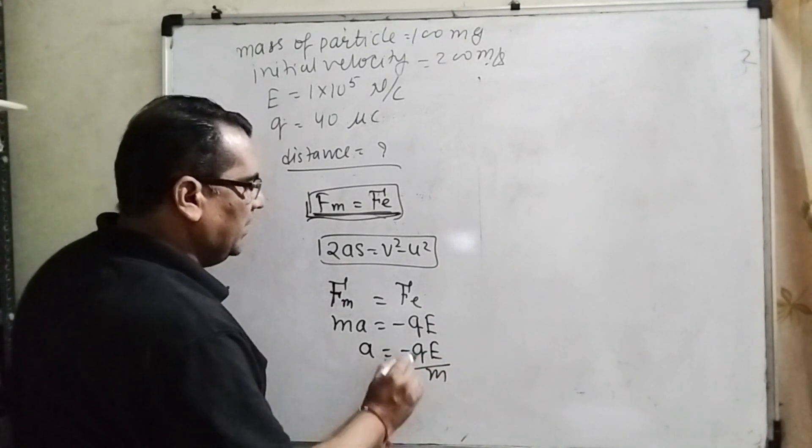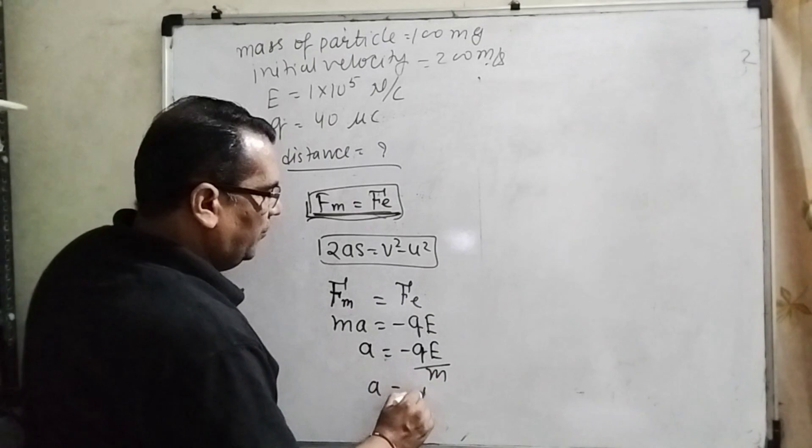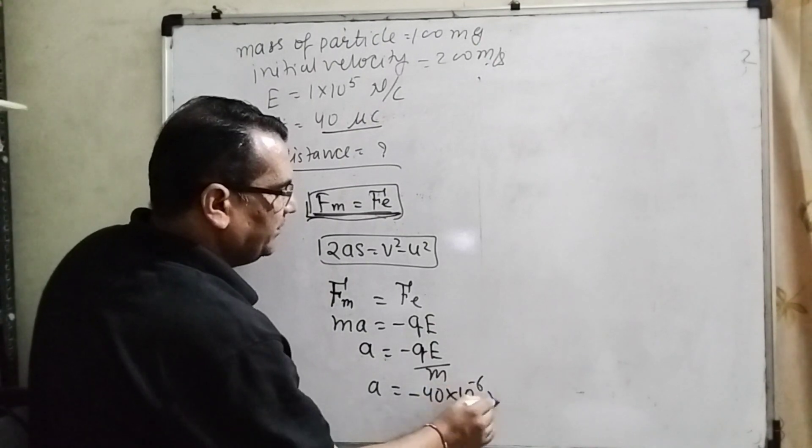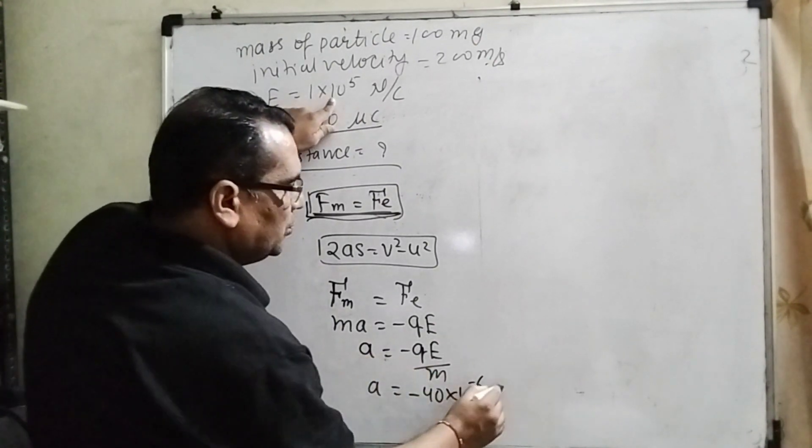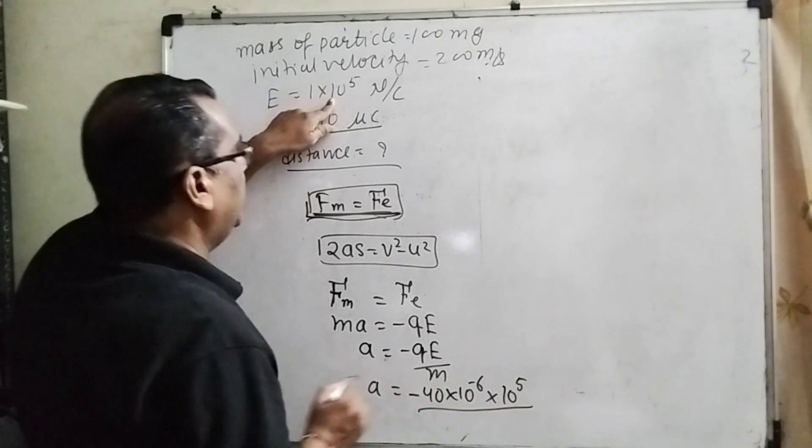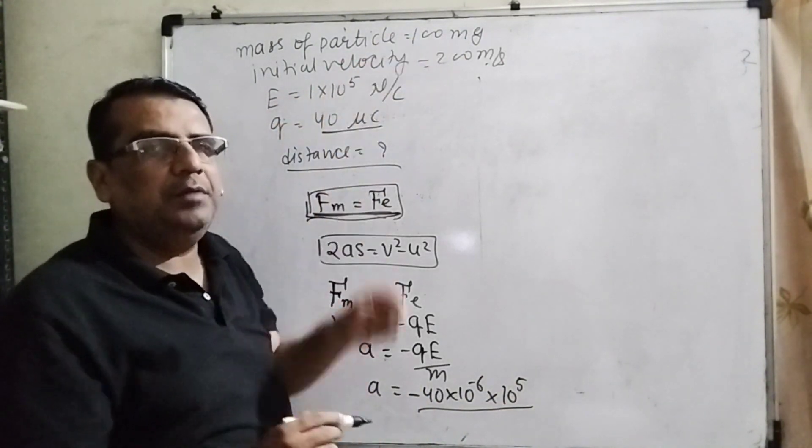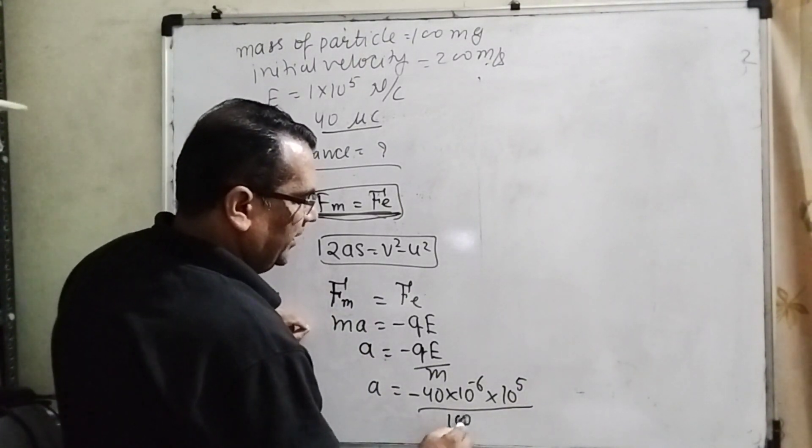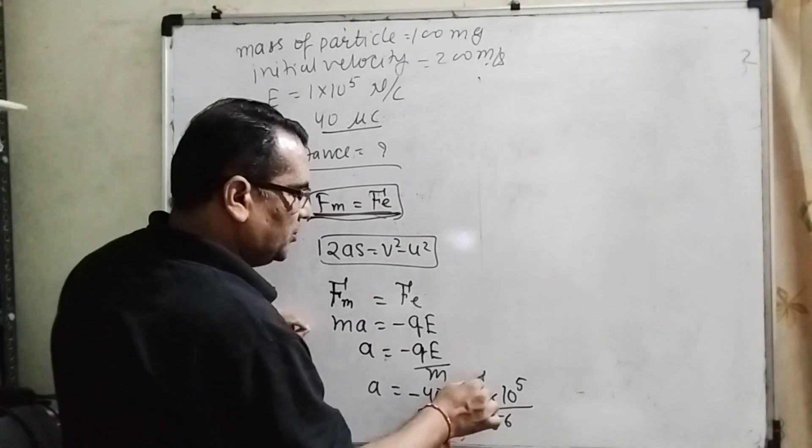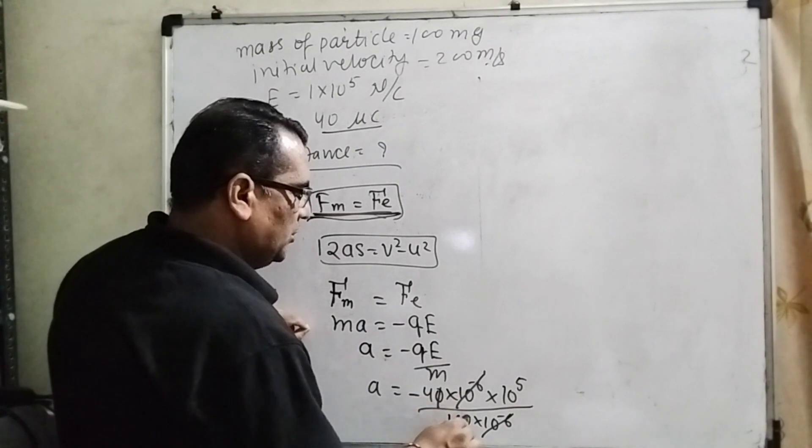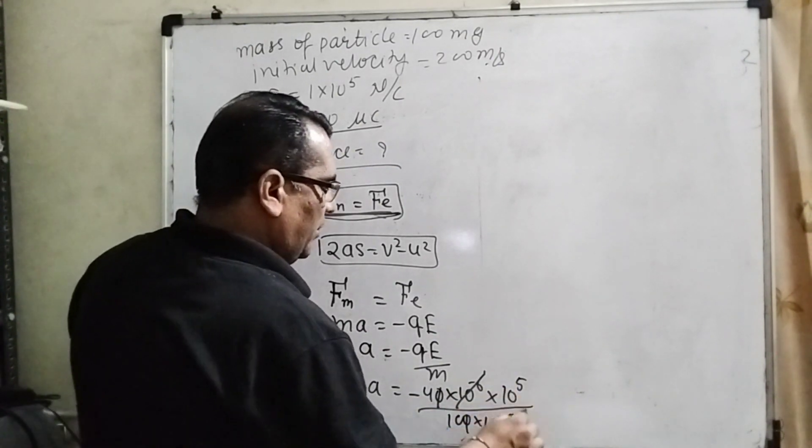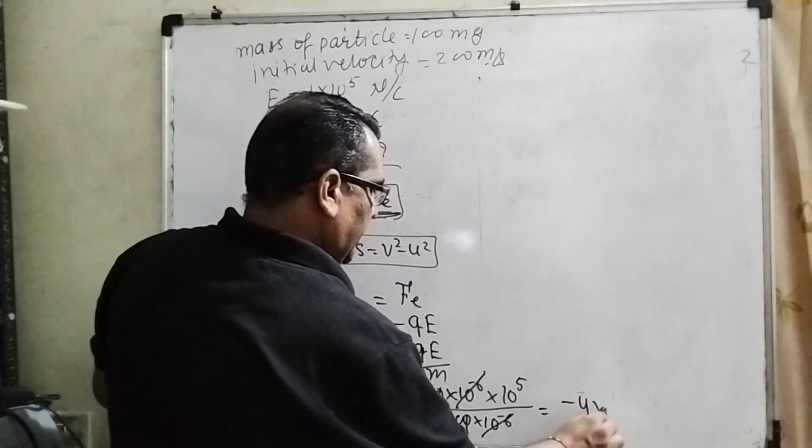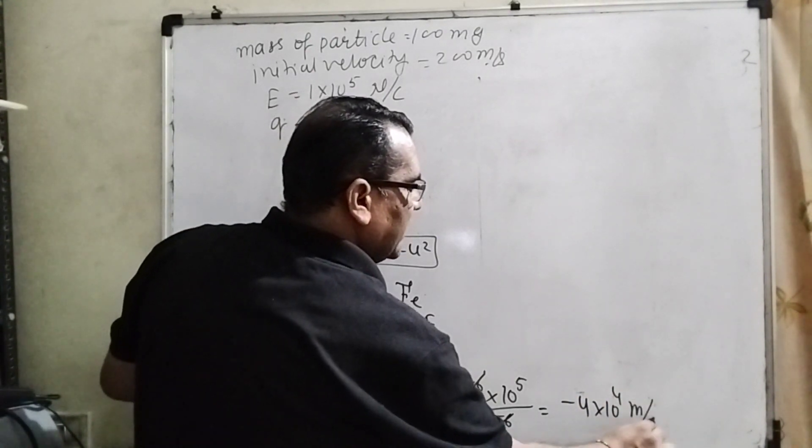Now substitute all the values we have been given. Charge 40 micro coulomb, convert to coulomb: multiply by 10^-6. Field strength is 10^5, and mass 100 milligrams. Convert to kilograms: multiply by 10^-6, so 100×10^-6. Here 10^-6 cancels out, zeros cancel, and it becomes 10^4. Therefore, we find acceleration equals -4×10^4 meter per second squared.